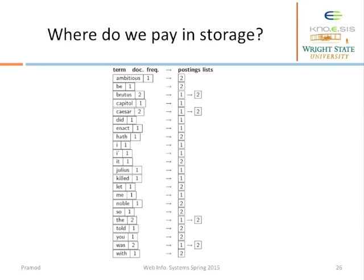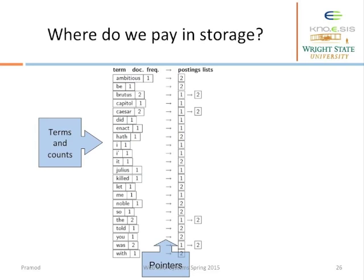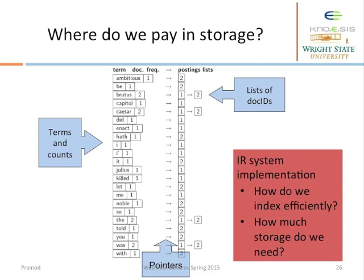Let's see what we need to pay for in terms of storage. We need to store the terms, the document frequencies, the pointers from each dictionary entry to the postings list, and the postings lists themselves. When considering information retrieval implementation, we need to be mindful of the efficiency of indexing and the amount of storage required to store the index.